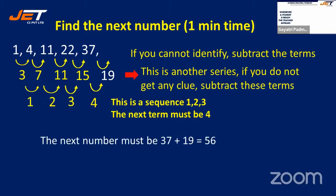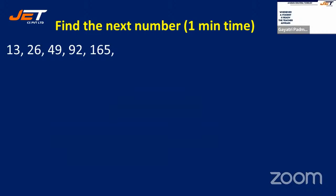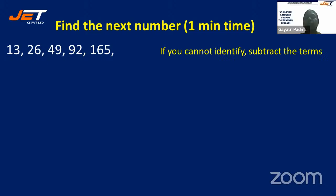Let us try the next sum: 13, 26, 49, 92, 165. Subtract the terms: 26−13=13, 49−26=23, 92−49=43, 165−92=73. This gives another sequence: 13, 23, 43, 73.